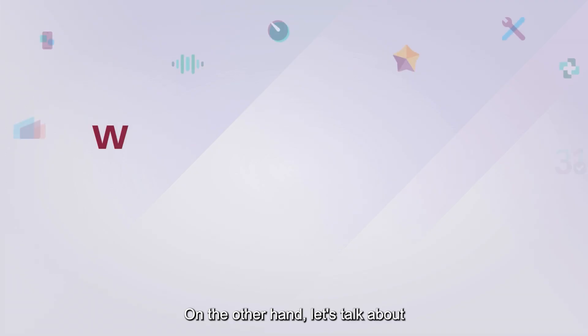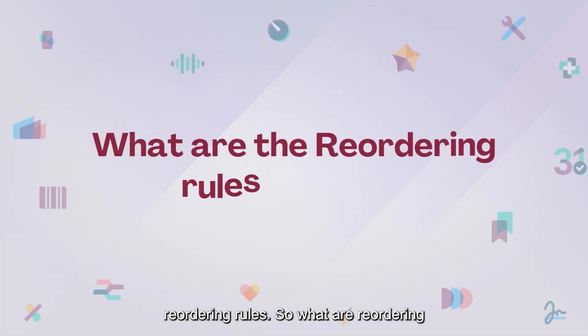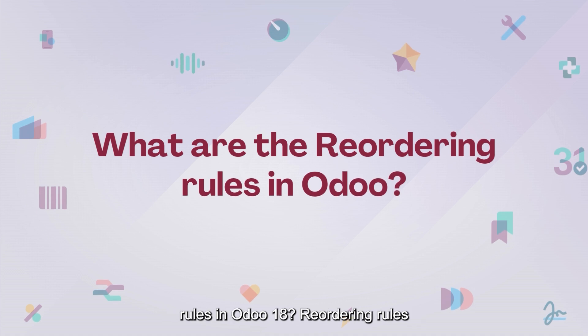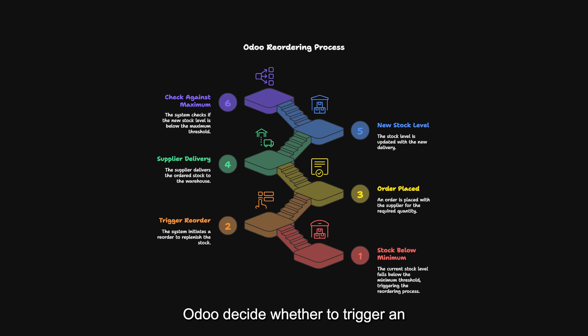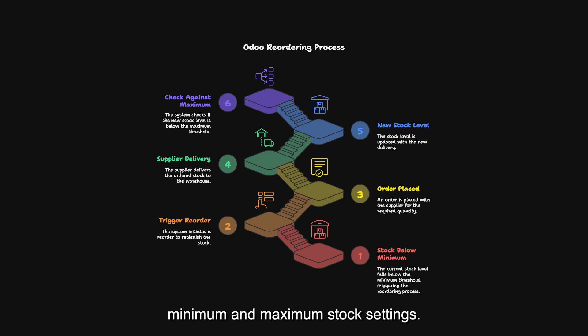On the other hand, Reordering Rules define when and how much of a product should be replenished. These rules help Odoo decide whether to trigger an automatic replenishment based on your minimum and maximum stock settings.